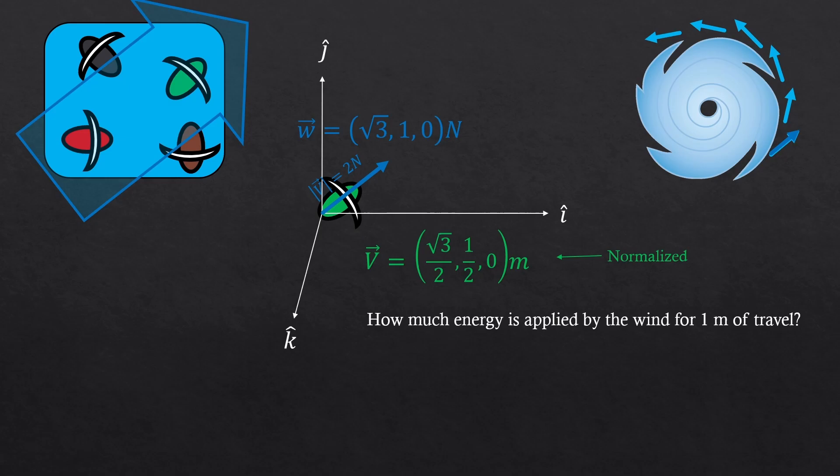Now, how much energy would be applied to the sailboat? All force would be applied since they have the same direction. So, 2 newtons times 1 meter, 2 joules.